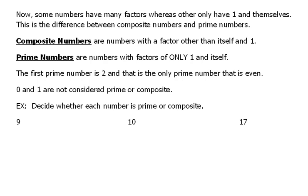Well this is going to be the difference between what's called a composite number and what's called a prime number. So we need the definitions here. Composite numbers are numbers with a factor other than itself and 1. Prime numbers on the other hand are numbers with factors of only 1 and itself.